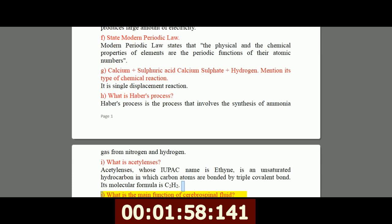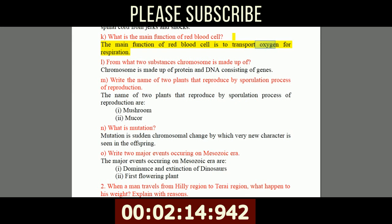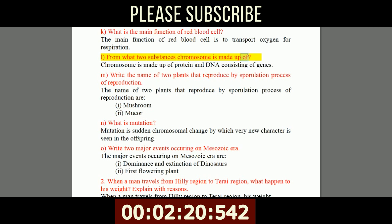J, what is the main function of cerebrospinal fluid? The main function of cerebrospinal fluid is to protect the brain and spinal cord from jerks and shocks. K, what is the main function of red blood cell? The main function of red blood cell is to transport oxygen for respiration. L, from what two substances is chromosome made up of? Chromosome is made up of protein and DNA consisting of genes.